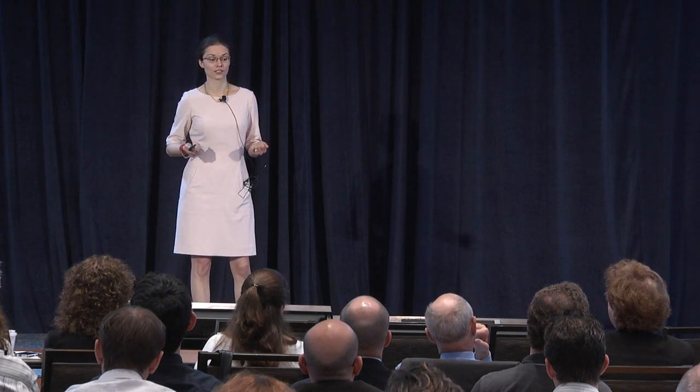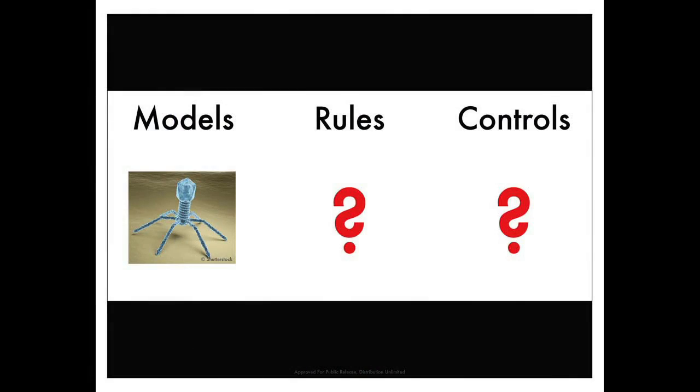We also have all these new technologies coming online that make these scales some of the most technologically accessible: technologies like additive manufacturing and tissue engineering, cellular and viral synthetic biology, omics measurements, as well as fluidics technologies, and all of the things we can build at the nanometer and micrometer scales that can give us ways of measuring what's happening in these systems. We can use these technologies to build top-down and bottom-up models and measurements that help us bracket these scales in space, time, and complexity.